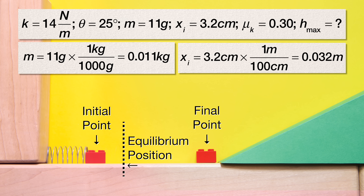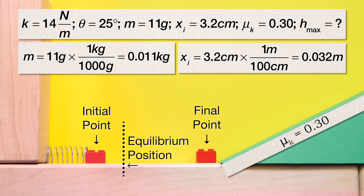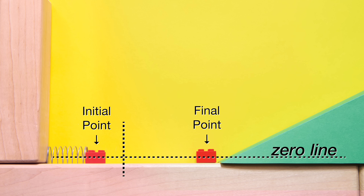Because there is friction on the incline, mechanical energy is not conserved there, and therefore the final point cannot be on the incline. Let's set the horizontal zero line at the center of mass of the block while it is on the level surface.